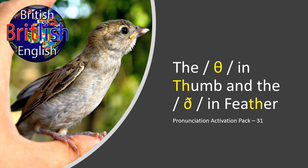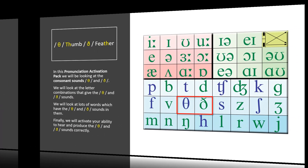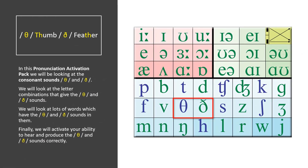The TH in Thumb and the TH in Feather — Pronunciation Activation Pack 31. In this Pronunciation Activation Pack, we will be looking at the consonant sounds TH and TH. We will look at the letter combinations that give the TH and TH sounds, lots of words which have those sounds in them, and finally we will activate your ability to hear and produce the TH and TH sounds correctly.